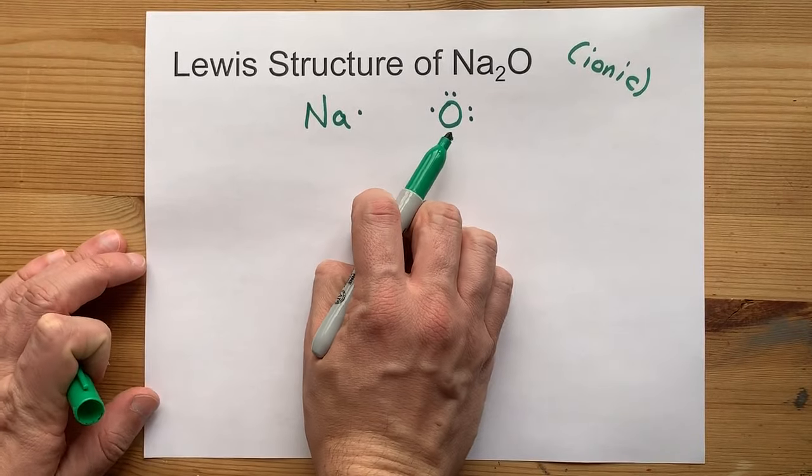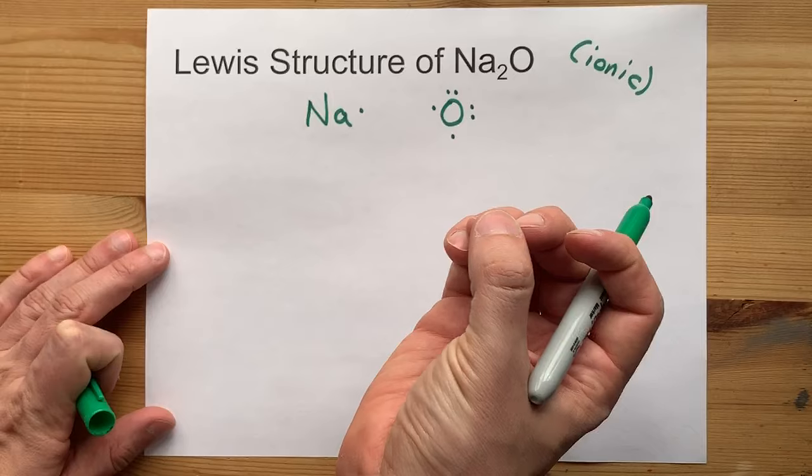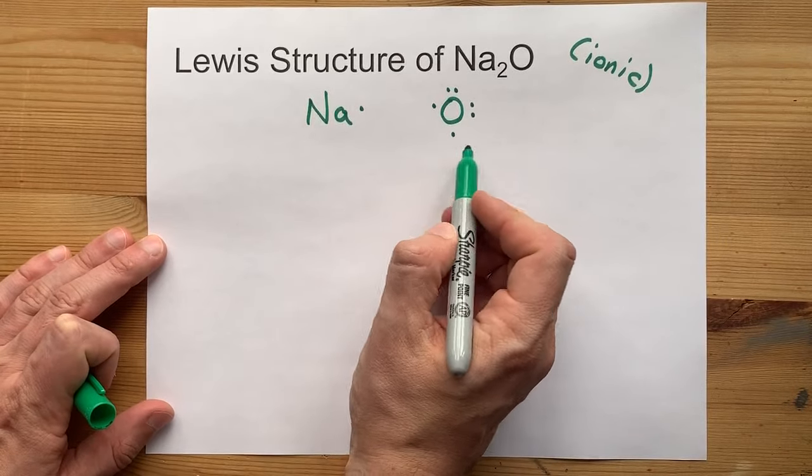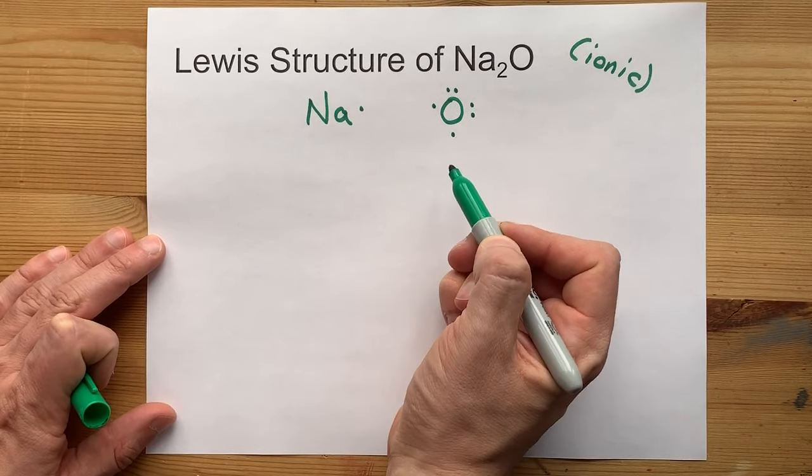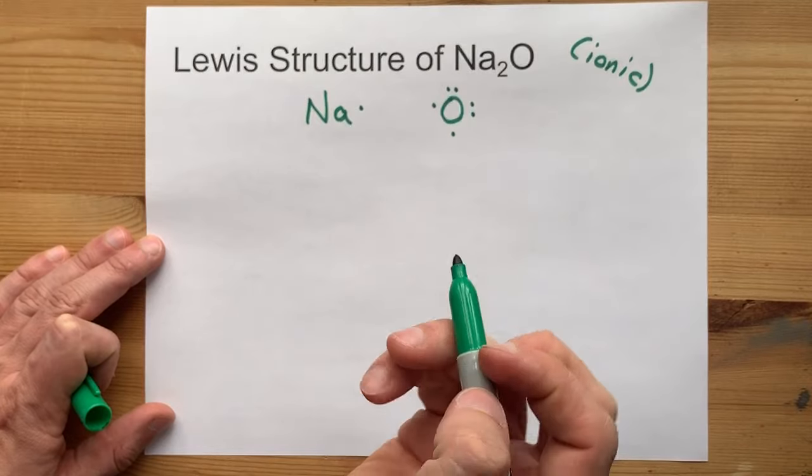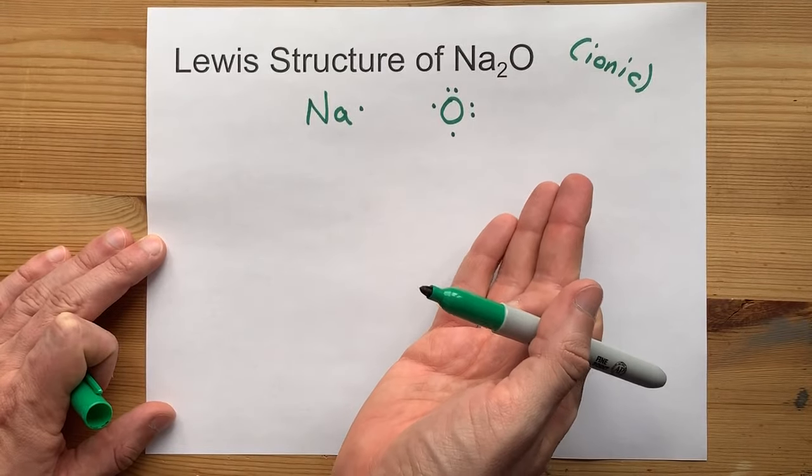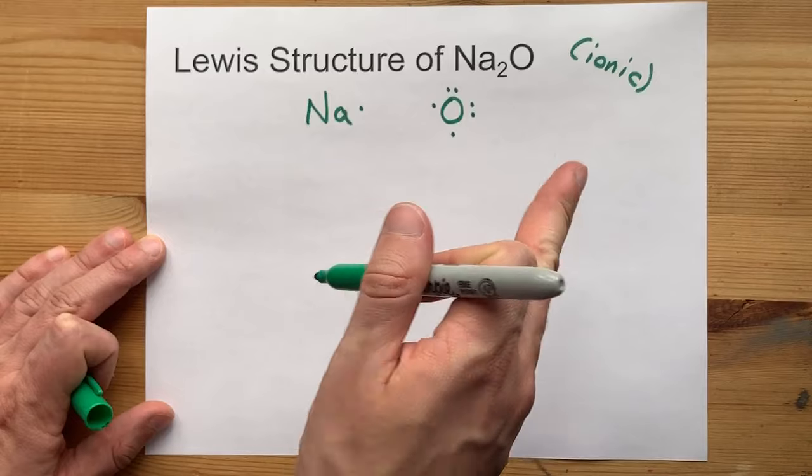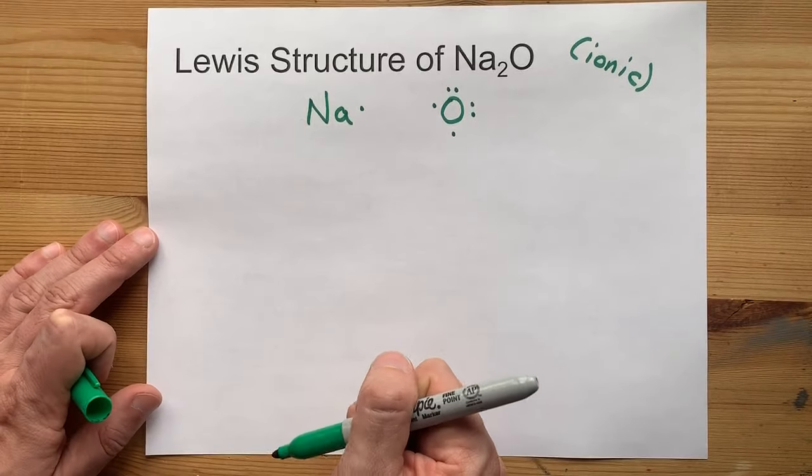Now, non-metals want a complete octet, as in 8 valence electrons in their outer shell, to be stable and happy. This oxygen only has 6, it needs 2 more electrons to have that full octet.